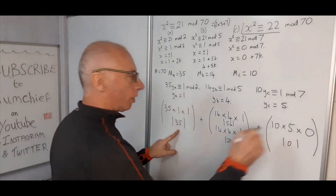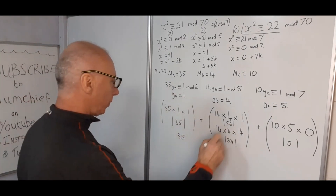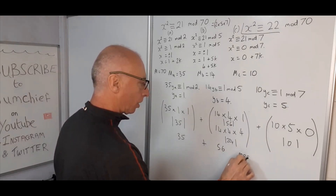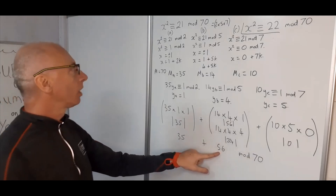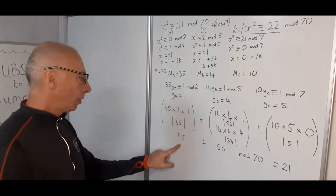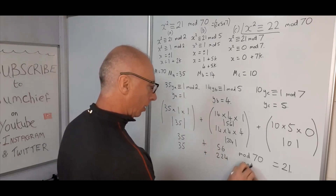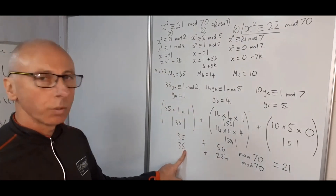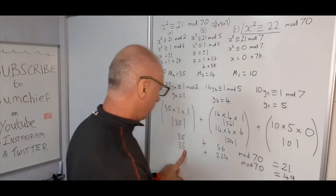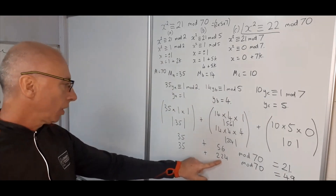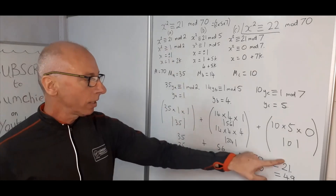The solutions are computed modulo 70. First: 35 plus 56 equals 91, and 91 mod 70 equals 21. Second: 35 plus 224 equals 259, and 259 mod 70 equals 49, because 3 times 70 is 210, leaving 49 plus 35... so 259 mod 70 equals 49. Therefore x equals 21 or x equals 49.